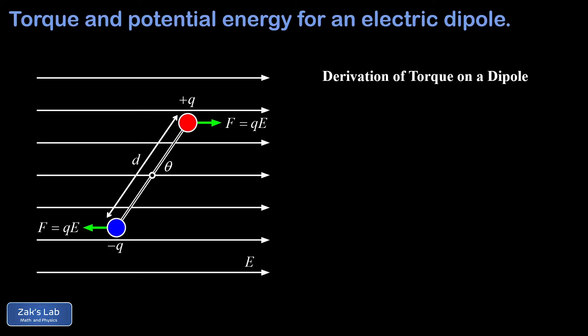That torque attempts to twist the dipole toward the stable equilibrium position where the dipole moment is aligned with the electric field. The diagram shows a distance of little d between the two charges. To figure out the net torque — which is twice the torque exerted by one force by symmetry — there's a useful trick: we can either take the perpendicular component of force times the lever arm, or take the entire force and find the perpendicular component of the lever arm.